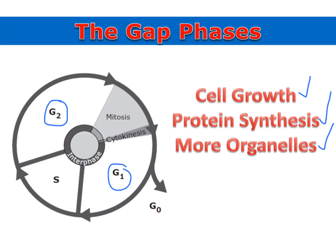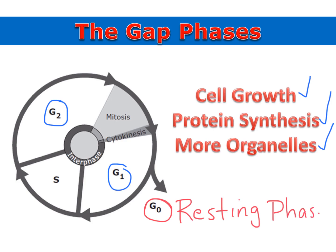Some cells also leave the cell cycle and enter the G0 phase, called the resting phase. When cells are in the resting phase, they are not preparing to divide. Some cells, like heart and nerve cells, permanently stay in the resting phase and no longer go through cell division.